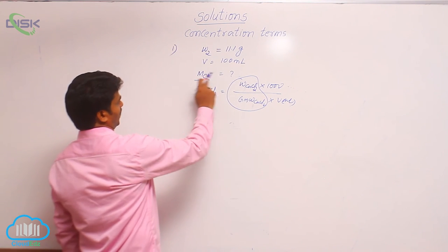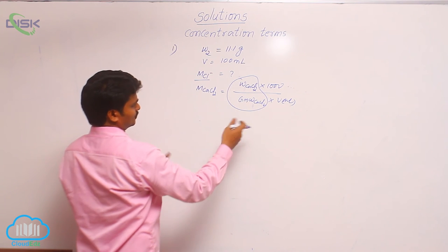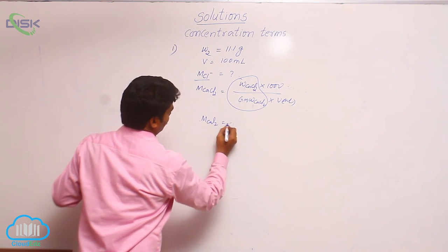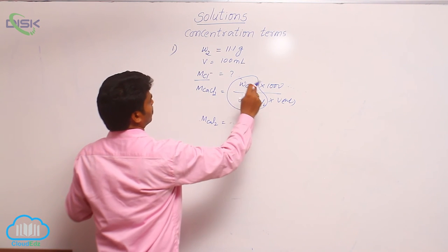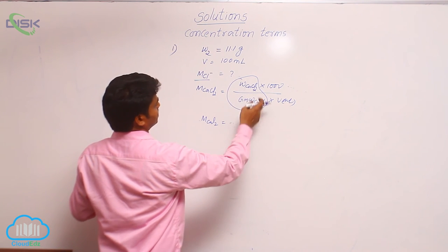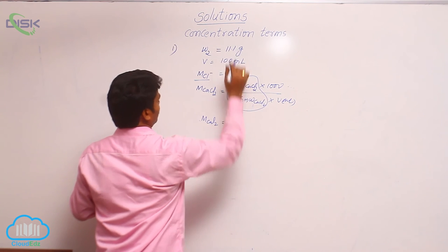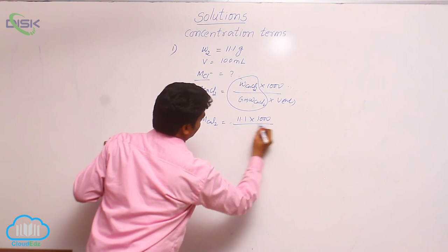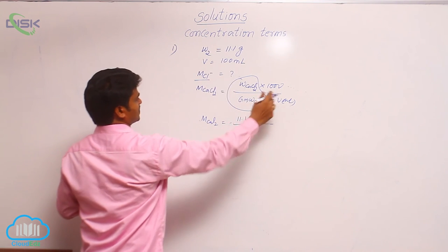Asked for molarity, now let us find out moles. So molarity of calcium chloride is equal to - which terms are given here? Weight of calcium chloride is given - 11.1 into 1000 by, here volume is also given.